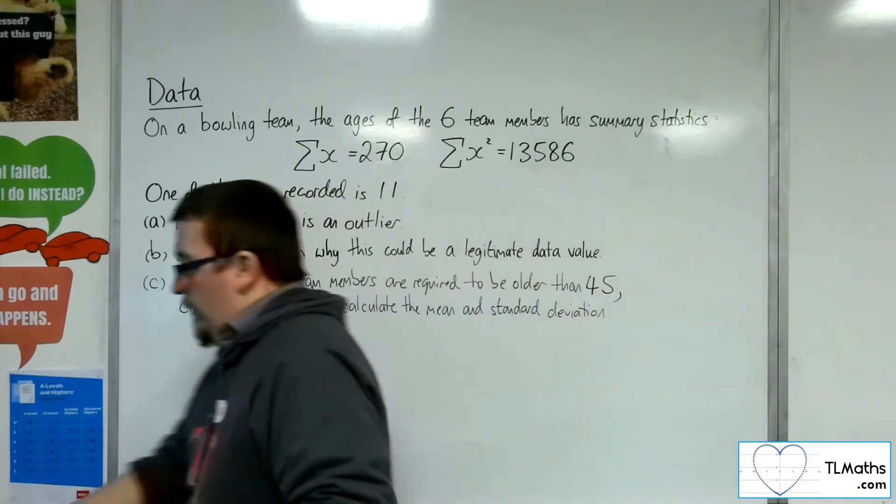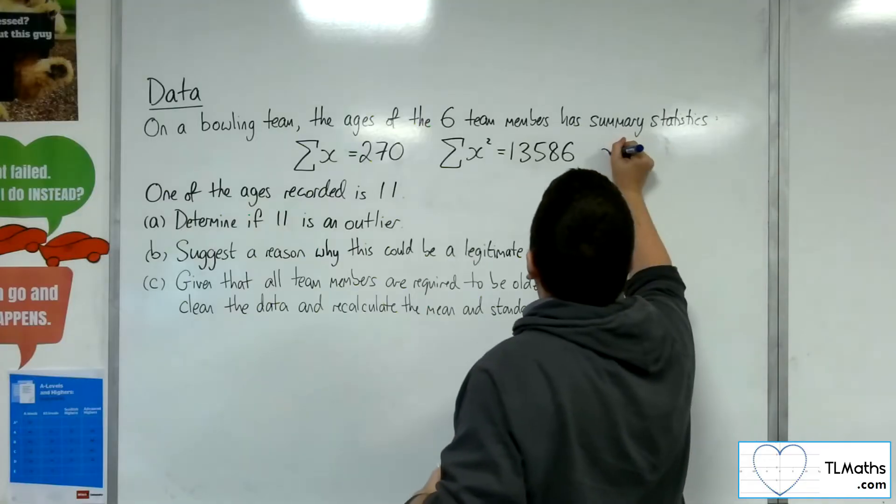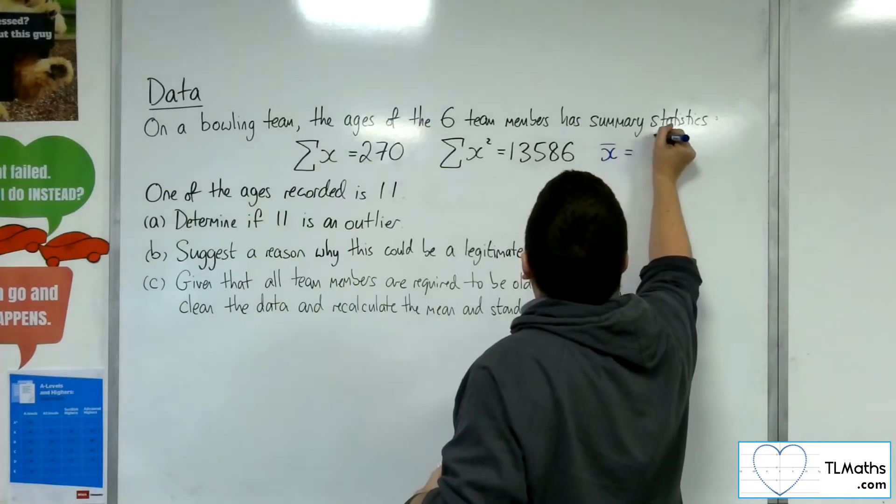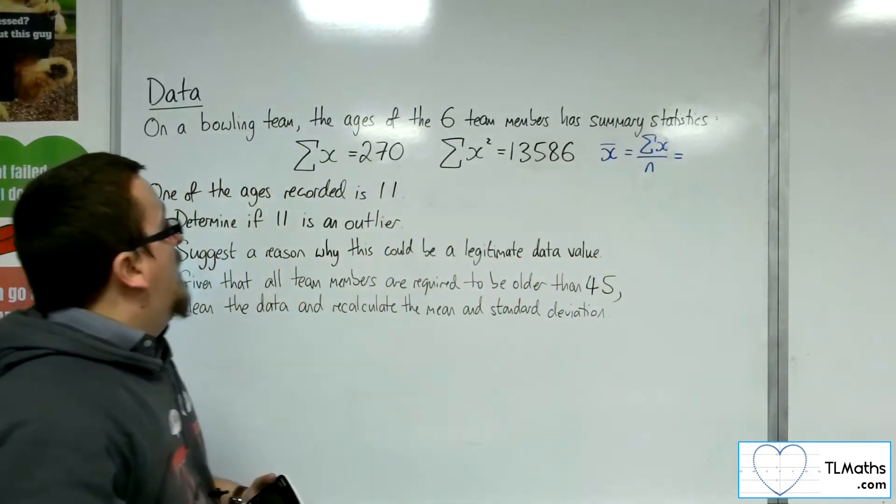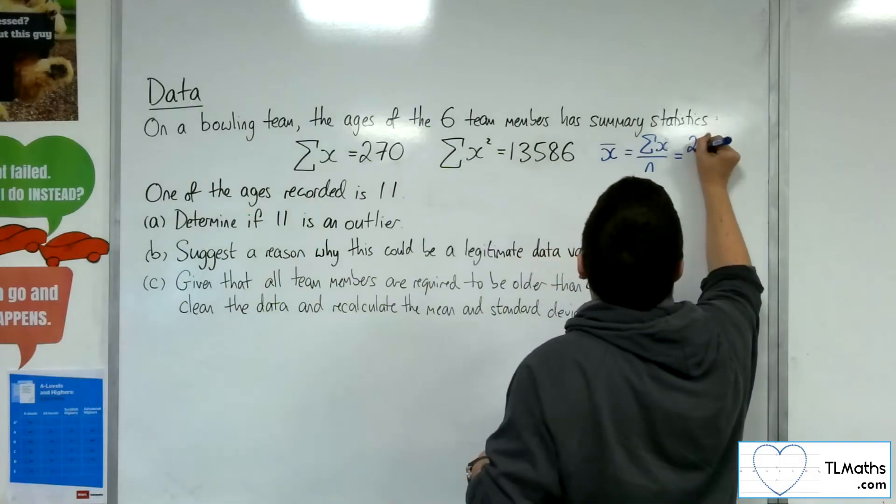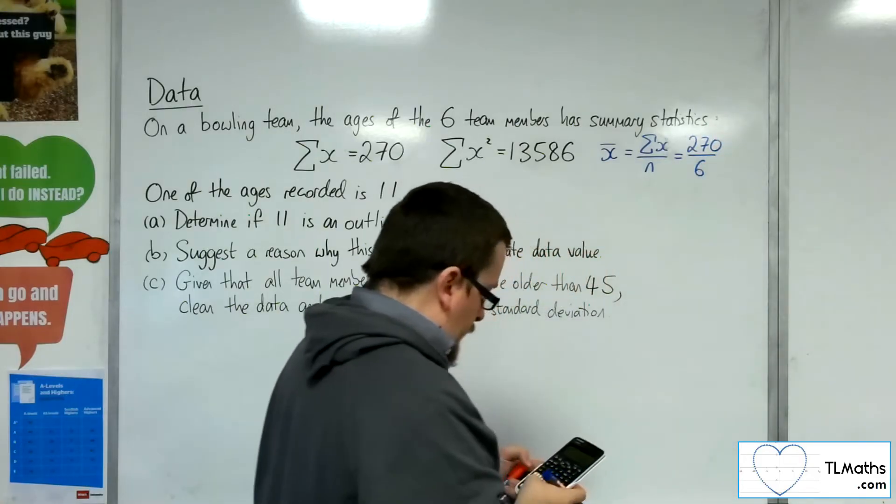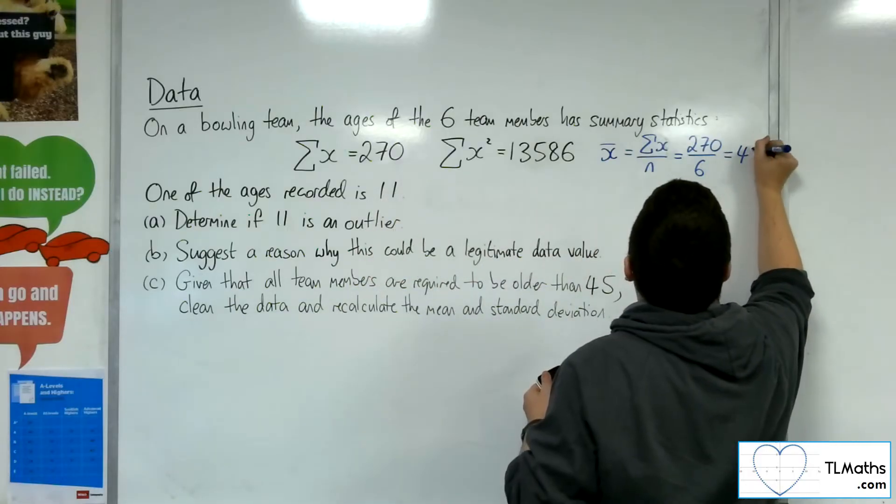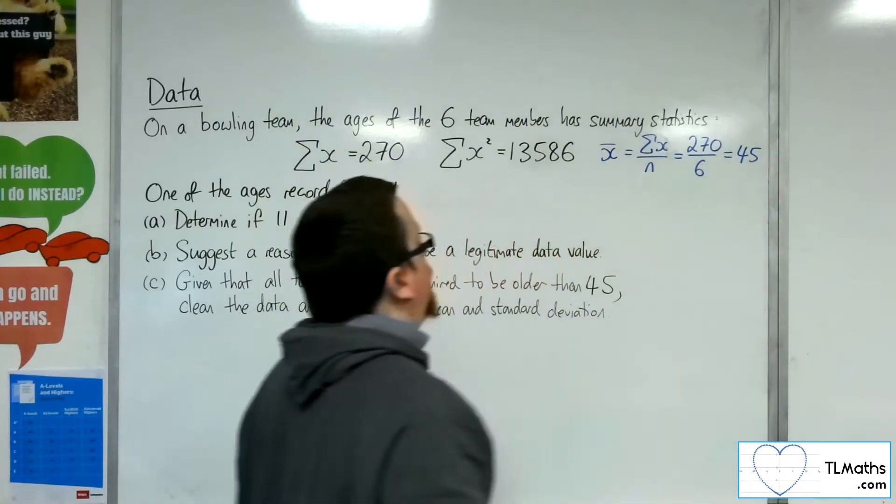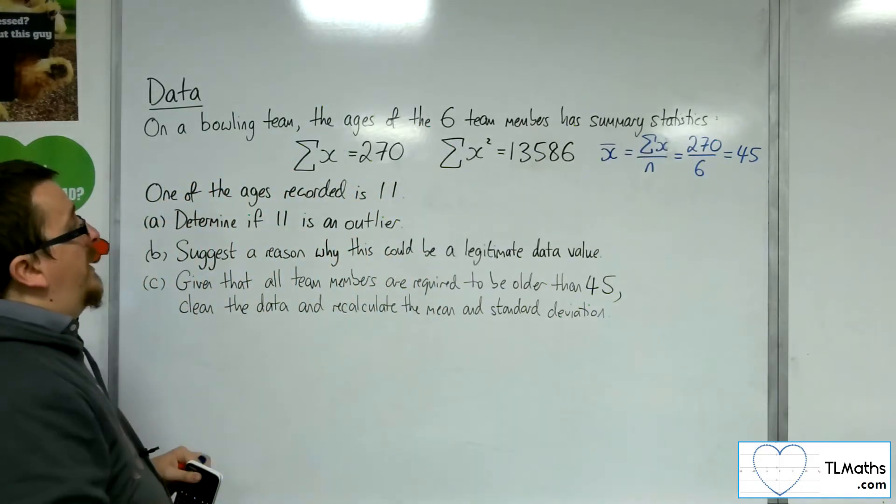So first of all, I want to find the mean. So the mean, x̄, is the sum of x divided by n, the number of data items. So that would be 270 divided by 6, and that gets me 45. So 45 is the mean age of the six bowlers.